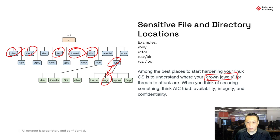When you think of securing systems, you have to look at the AIC triad: availability, integrity, and confidentiality.